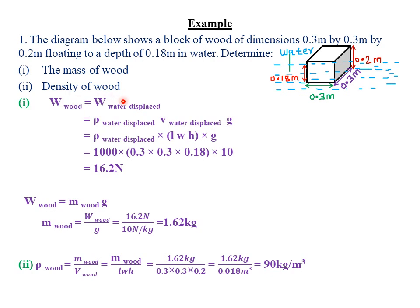From the law of flotation, we established that the weight of the floating body must equal the weight of the fluid it displaces. The body floating is the block of wood and the fluid displaced is water. Therefore, the weight of the wood equals the weight of the water displaced. Remember: if we find the weight, we know that weight equals mass times gravity, so we can then find the mass. Weight of wood equals weight of water displaced, which equals ρVg.